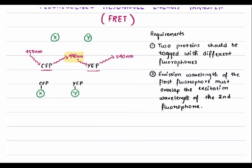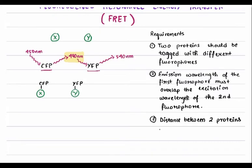Another important requirement which I missed is that the two interacting proteins must be within a certain distance of each other. The distance between the two proteins must be less than 10 nanometers. If the two proteins are very far apart, the emitted spectrum cannot be used as an excitation wavelength for the next fluorophore.